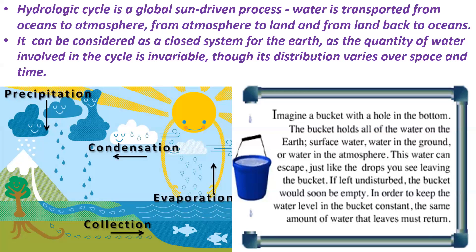The hydrologic cycle is a global, sun-driven process. Water is transported from oceans to the atmosphere, from the atmosphere to land, and from land back to oceans. It can be considered a closed system for the Earth, as the quantity of water involved in the cycle is invariable, though its distribution varies over space and time. The hydrologic cycle describes the circulation of water from oceans and other water surfaces to the atmosphere and to the land again. A major source of atmospheric water vapor is evaporation from oceans.